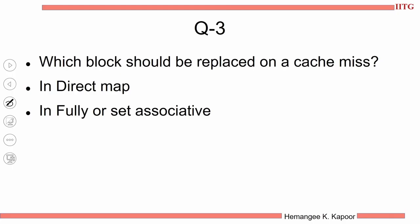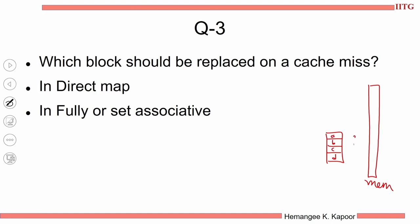Question 3 is: which block should be replaced on a cache miss? And why does this question arise? Because our cache is small and the memory is very big. We just have say 4 blocks in the cache and there are more than a thousand blocks in the memory. So if blocks A, B, C, D are sitting here and block F wants to come into the cache, one of them has to move out. So which block should be replaced?